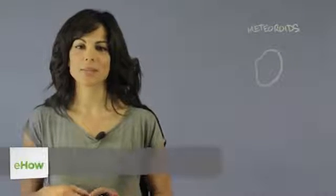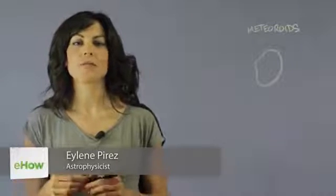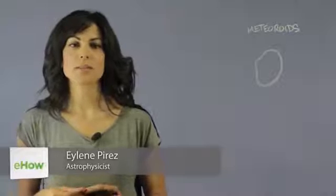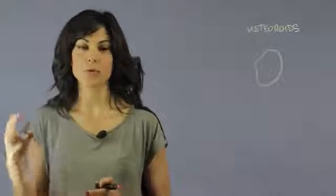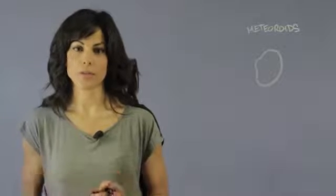Hi, my name is Aileen Perez. I'm an astrophysicist and these are diamonds found in meteorites. Meteorites are the remains of a meteoroid that has landed on Earth. They've gone through our atmosphere and have actually landed on Earth.